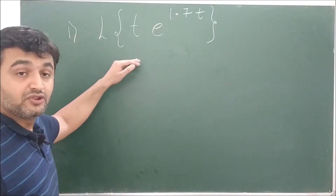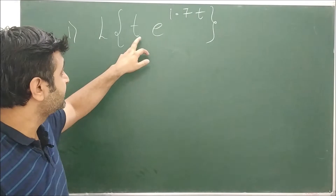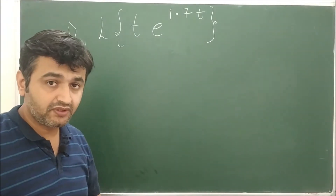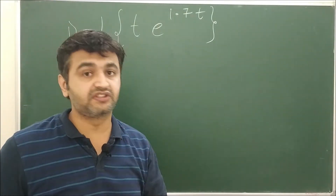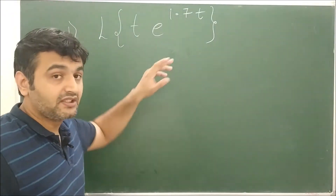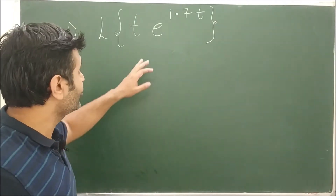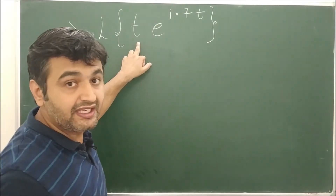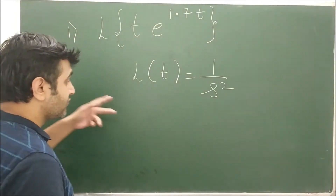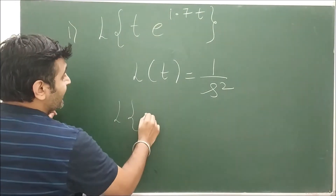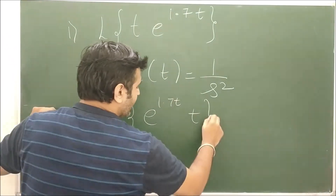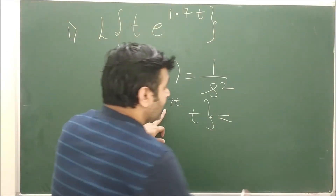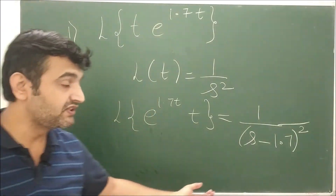Now let's go to the examples. Suppose the question is to find the Laplace of t · e^(1.7t). As soon as you see an exponential function, the first thing you should think of is the first shifting theorem. So you ignore the exponential for now — what is left is t. The Laplace of t is 1/s². By the first shifting theorem, you simply shift s by a = 1.7, so the answer is 1/(s − 1.7)².